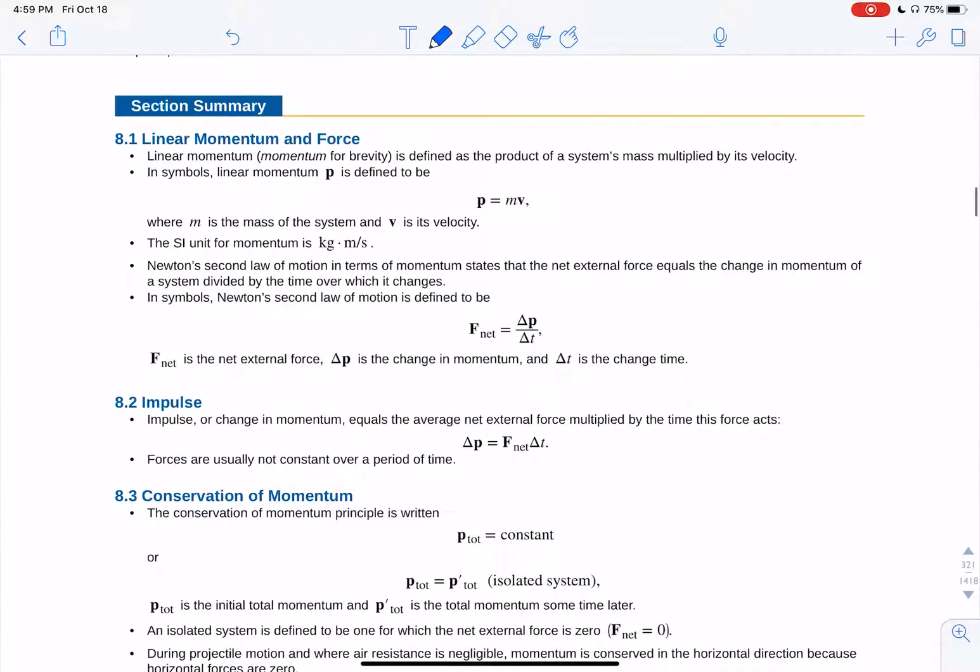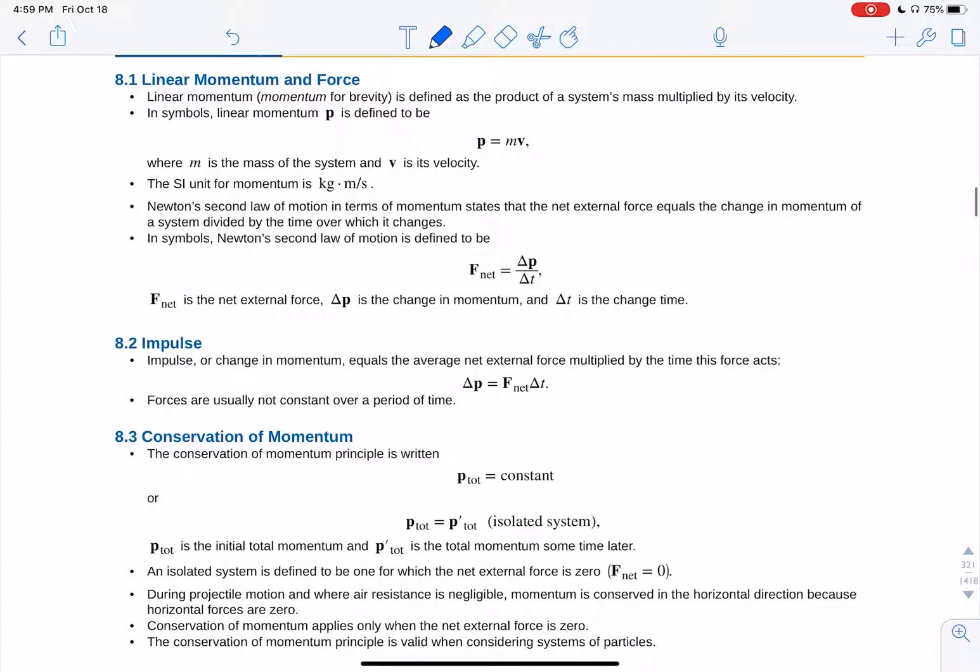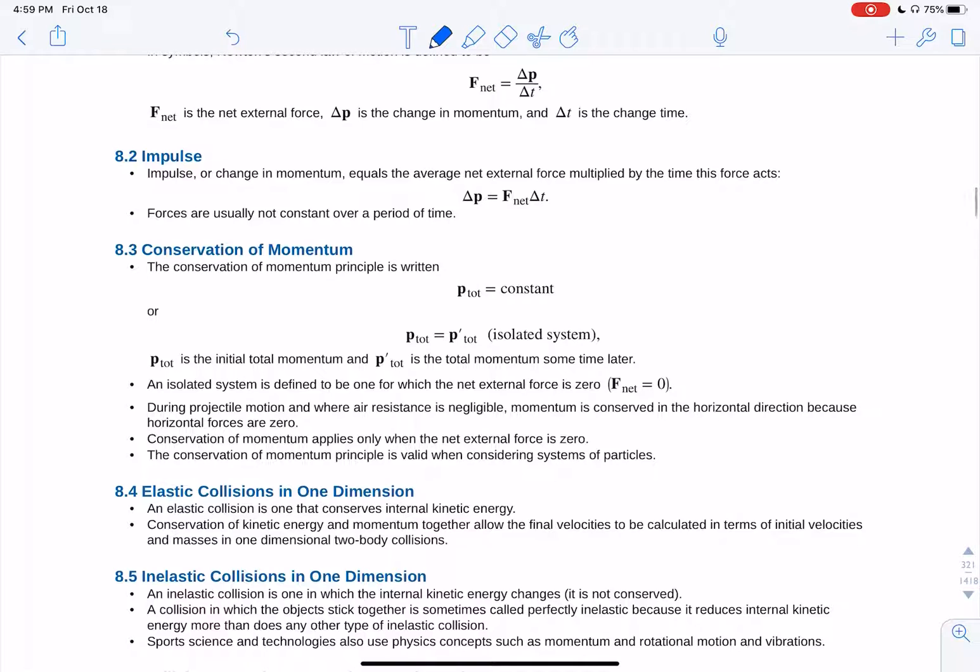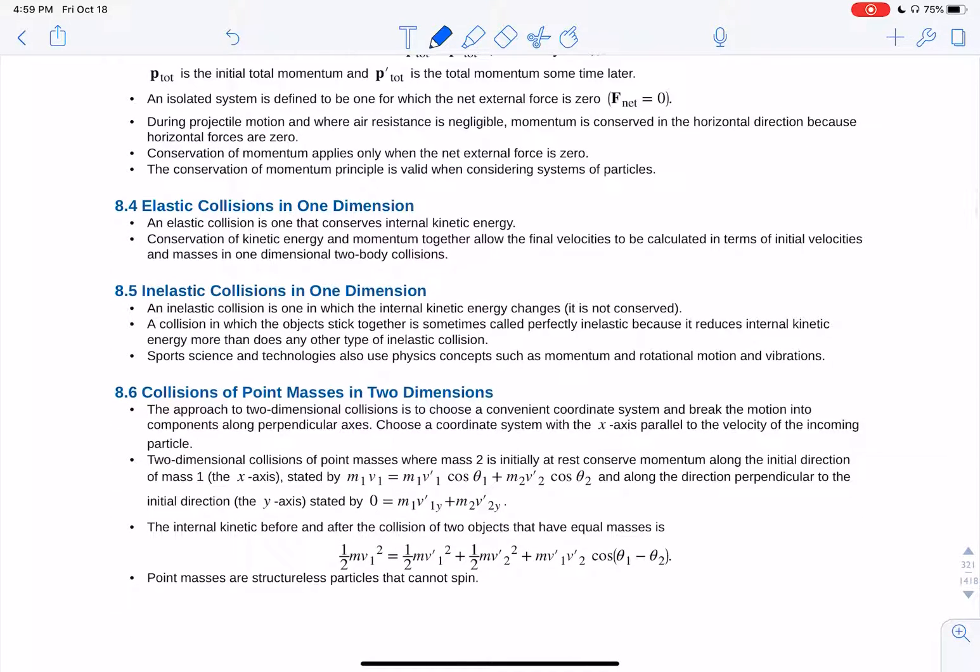So in summary, momentum is MV. Impulse is force times time or change in momentum. Conservation momentum says that your momentum before a collision is equal to the momentum after a collision. In an elastic collision, where they bounce off each other, you can have momentum conserved and kinetic energy conserved.